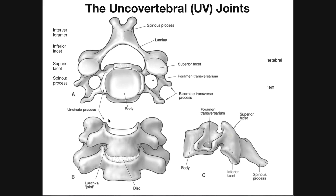These uncinate processes do not exist in C1 or C2. They will grow from loose vascular fibrous tissue lateral to the annulus fibrosus of the disc, and by about seven to eight years of age the uncinate processes have grown enough to form a type of joint — called an adventitious joint, but certainly not a synovial joint.